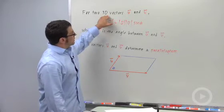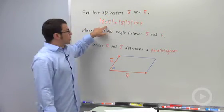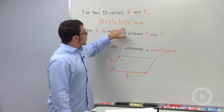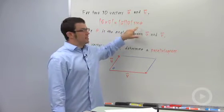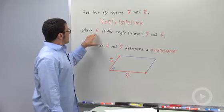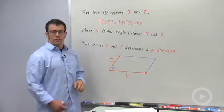For any two 3D vectors u and v, the magnitude of their cross product equals the product of their magnitudes times the sine of theta. And theta, of course, is the angle between vectors u and v.